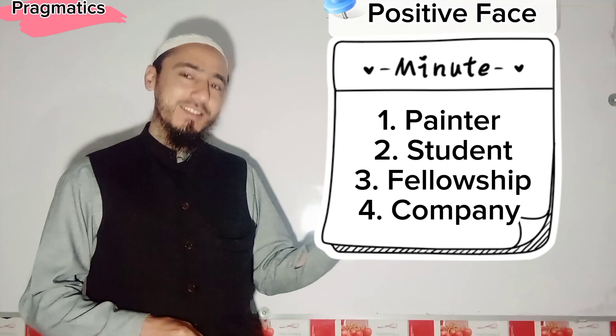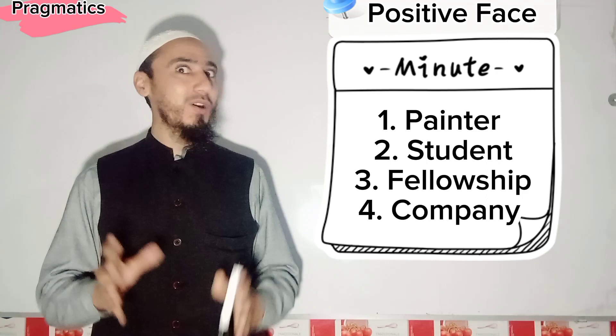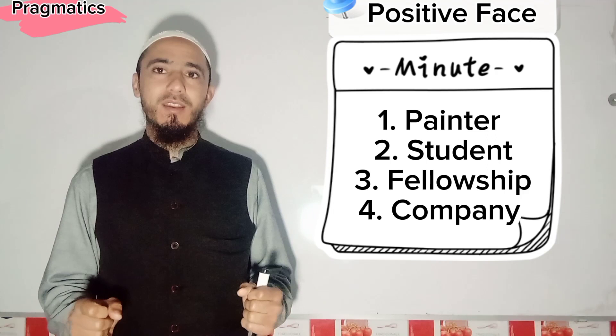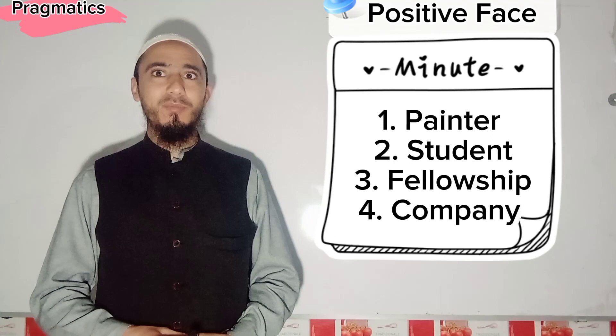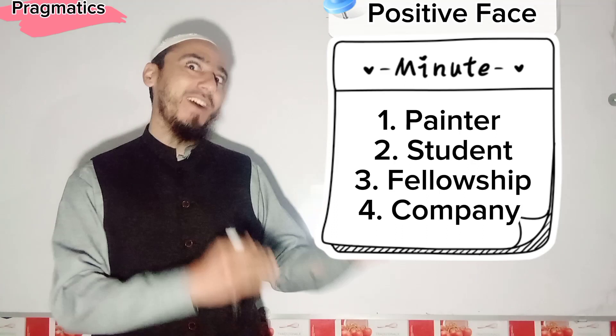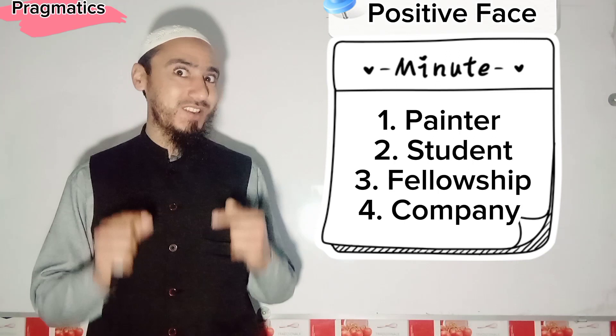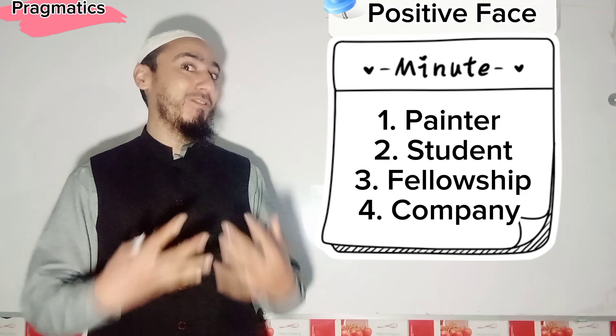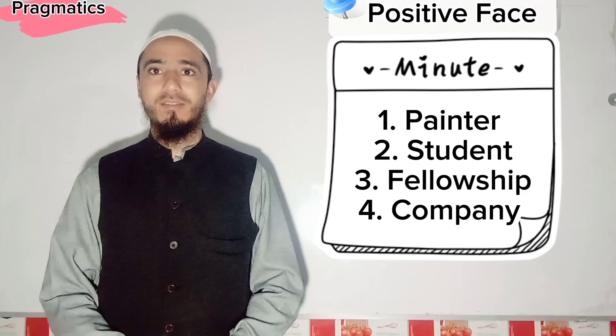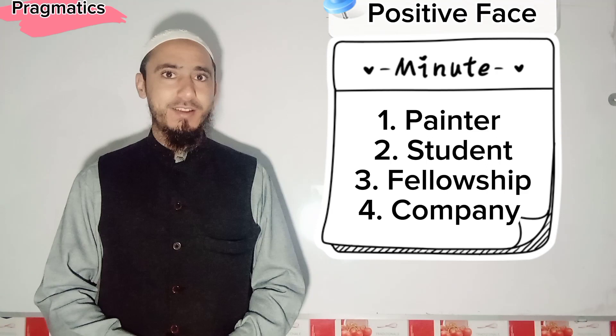Another example of politeness: you are working in a company and your friends, your colleagues, are going for lunch. Now you expect them that you should be invited by them. Your expectation from their behalf is that they should invite you — this means that you want to be accepted. All these are examples of positive politeness.